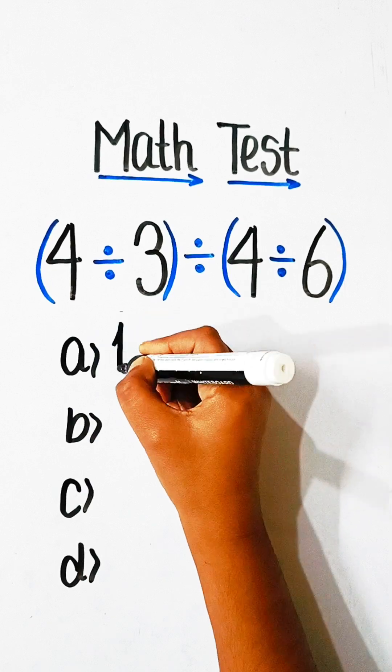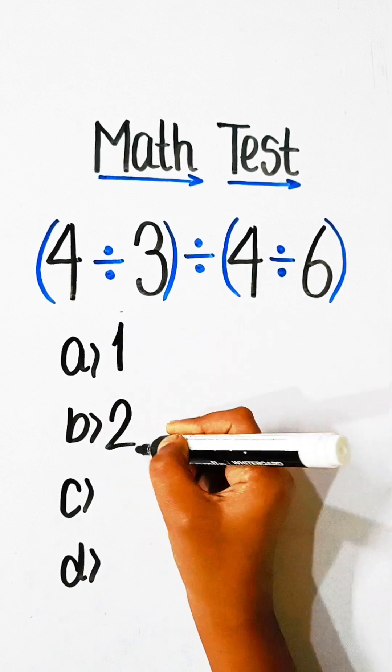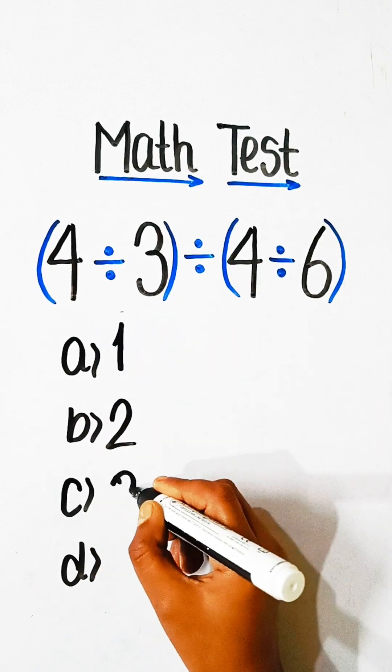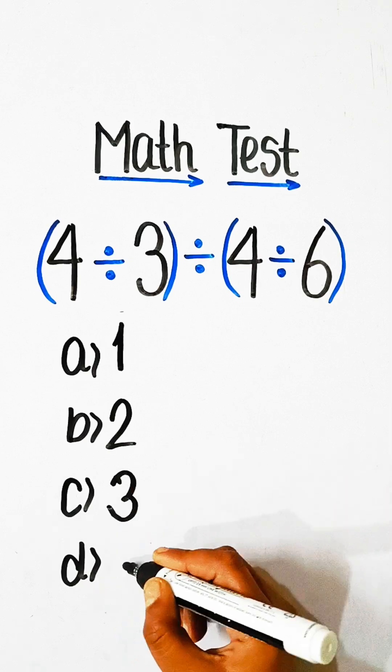Option A: 1, option B: 2, option C: 3, or option D: 4.